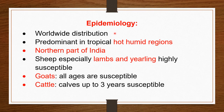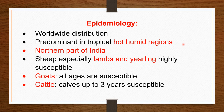Regarding epidemiology, the disease has worldwide distribution and is present in all countries where sheep are found. However, the disease is more prevalent in tropical, hot, and humid regions during summer and rainy season, as that climate is favorable for the worm. In India, the northern part has both a hot humid climate and a large sheep population, making it especially affected.